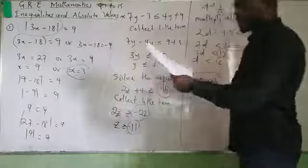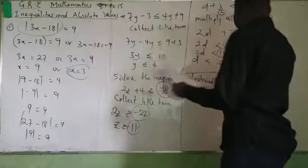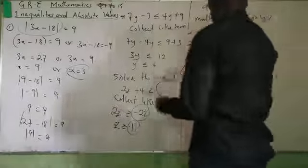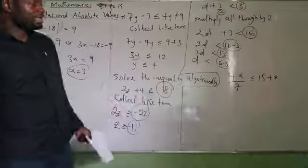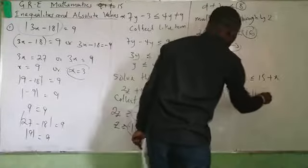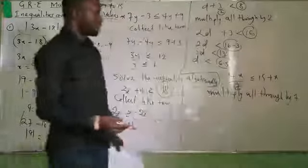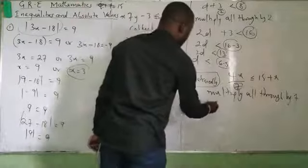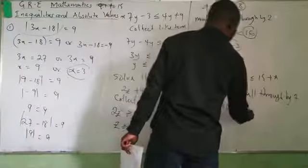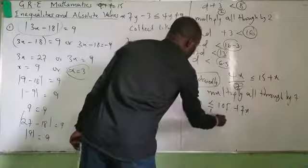I have another problem: 4X all over 7, less than or equal to 15 plus X. What is very important is your conclusion — your answer — because we are talking about a multiple choice exam, and speed is very important. Multiply all through by 7, giving 4X less than or equal to 105 plus 7X.